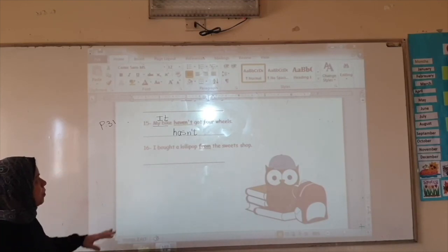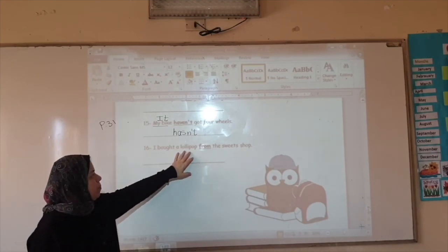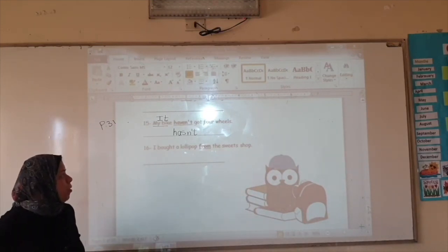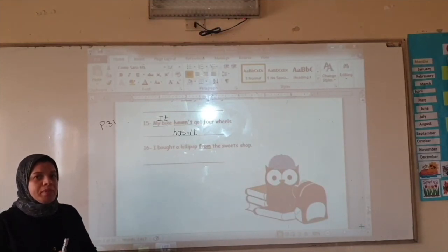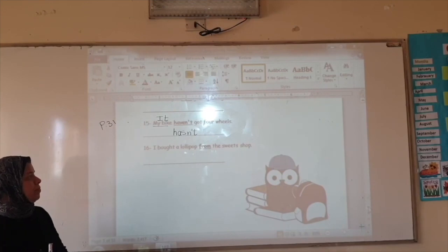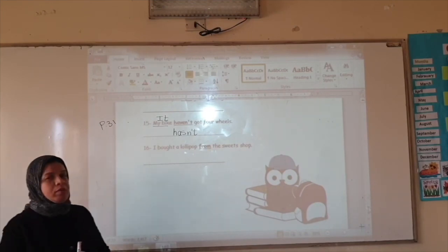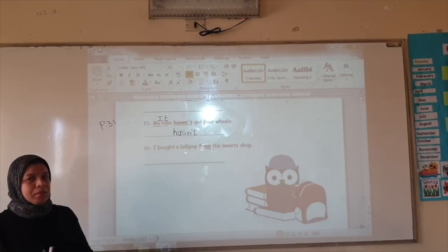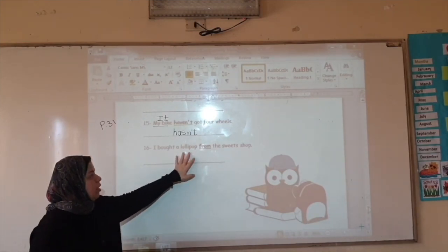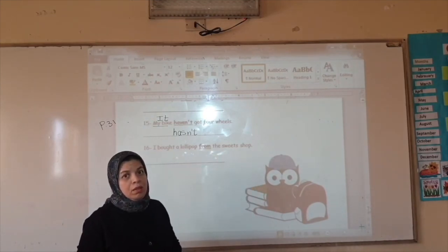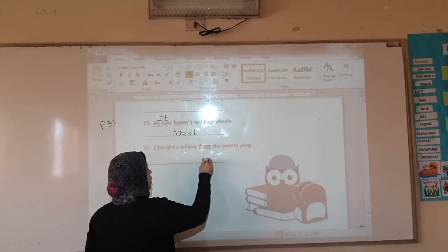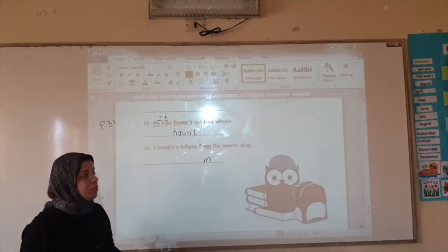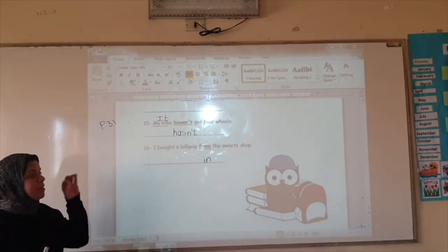Number sixteen. I bought a lollipop from the sweet shop. What is the mistake here? From. What do I use instead of from? Let's think about it. I bought it in the sweet shop. Because the lollipop is inside the sweet shop.